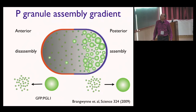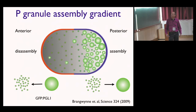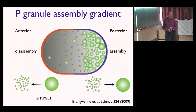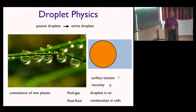On the anterior side, these structures tend to dissolve and disassemble. On the posterior side, they grow and assemble. This process is mediated by a gradient of a protein called MEX-5, set up with the help of domains in the cell membrane. When studying this problem in collaboration with Cliff Brangwi, we realized that P granules behave like liquid droplets. We have to think of this as a problem of an emulsion — with many droplets that grow and shrink — a spatially inhomogeneous emulsion. This brings us to the physics of droplets, the key theme of today's talk.